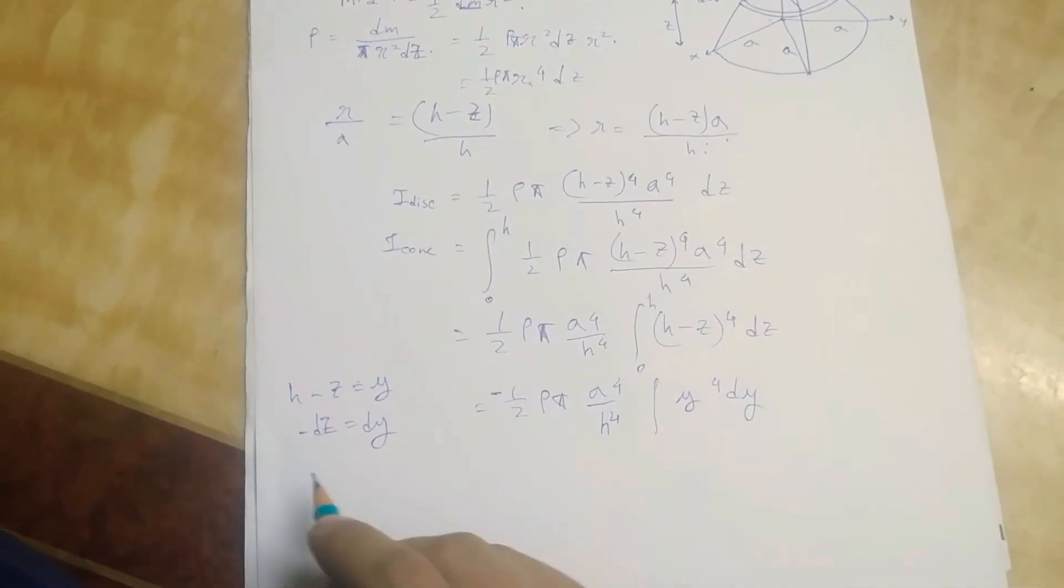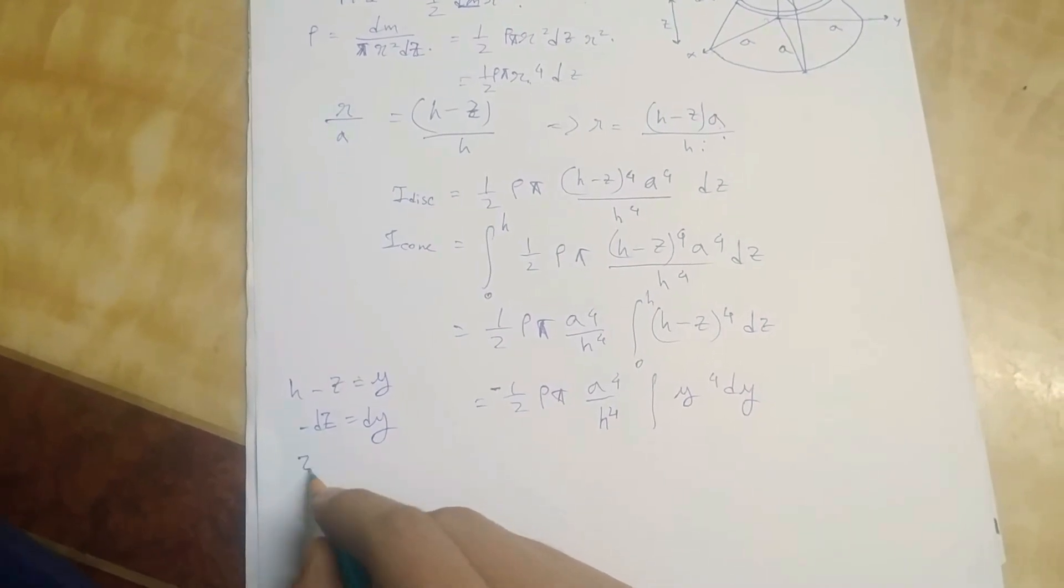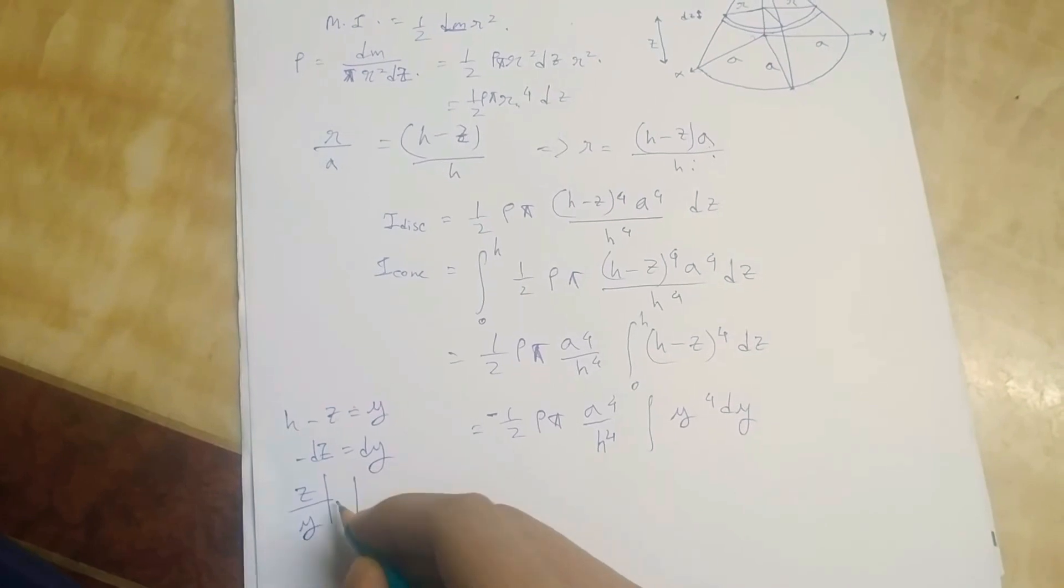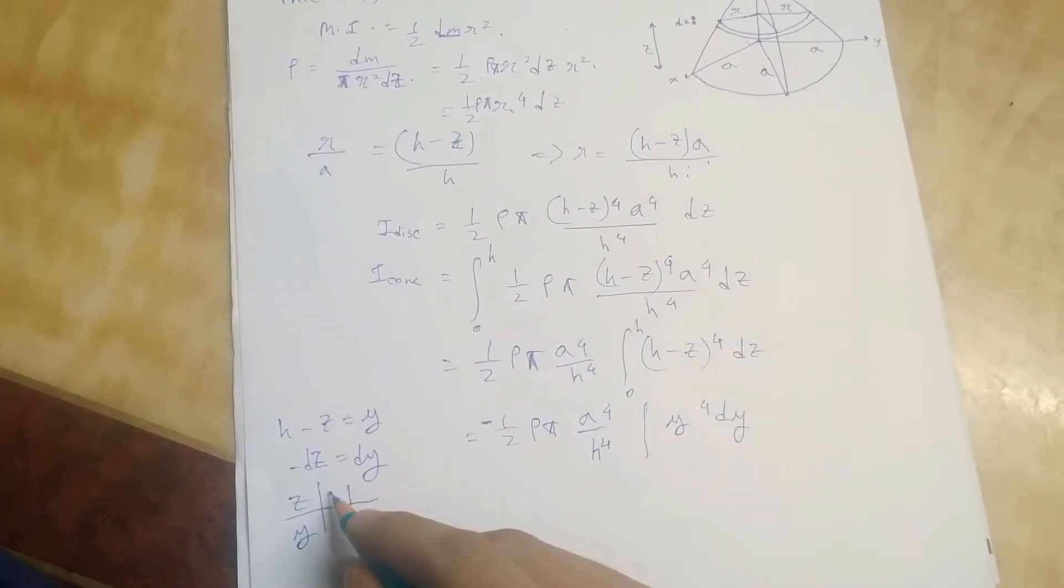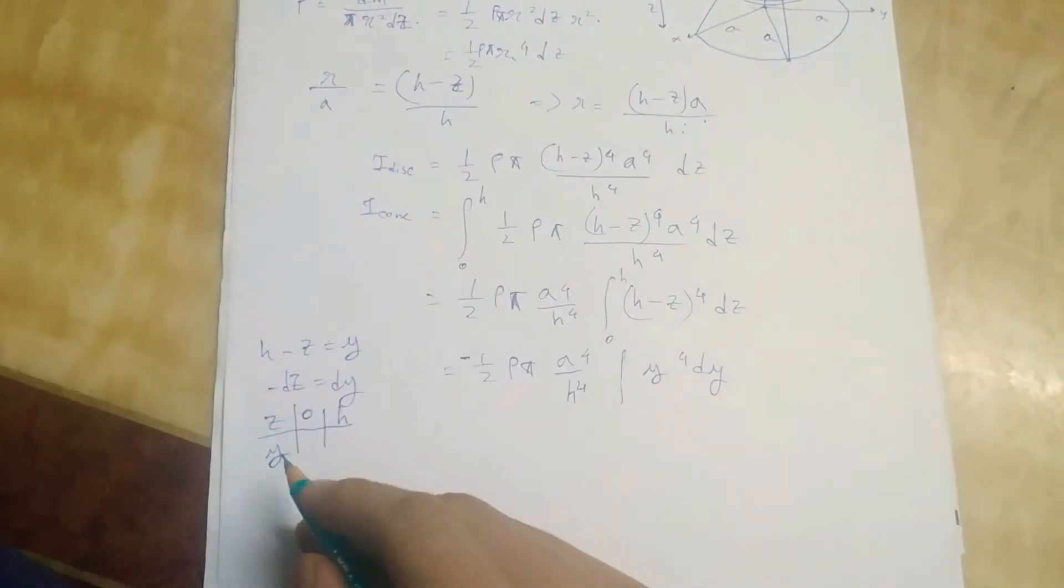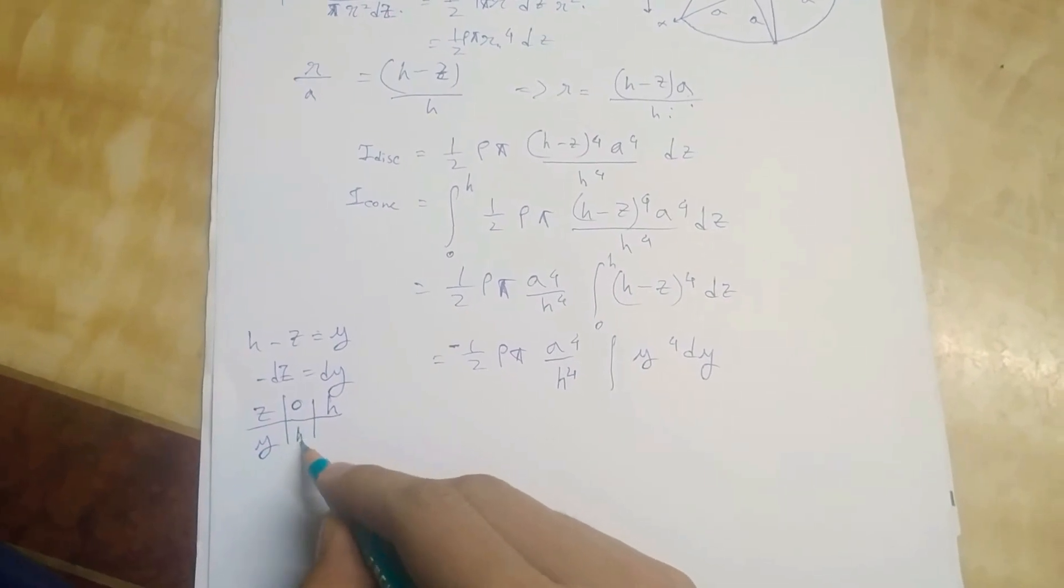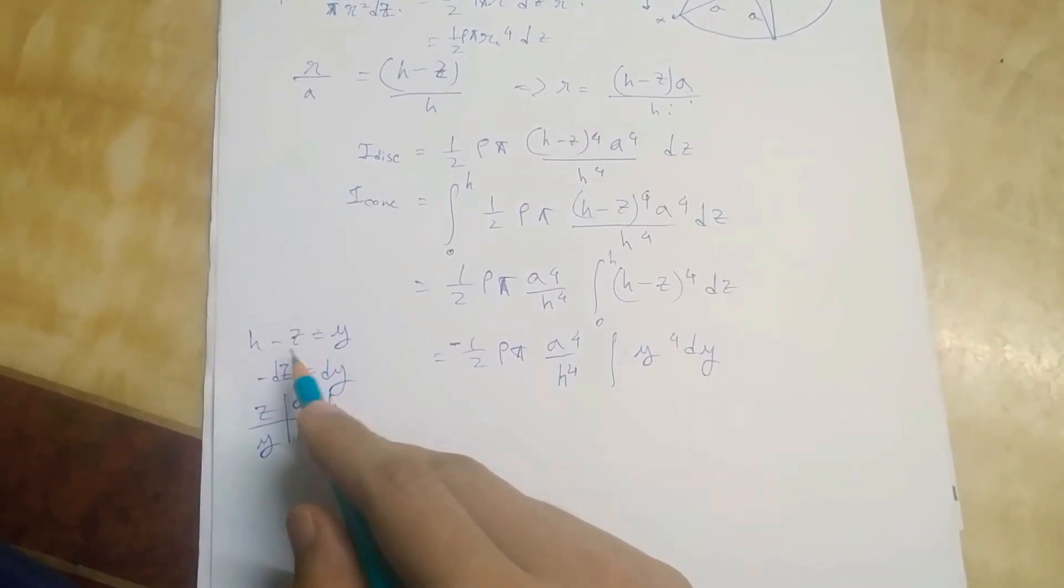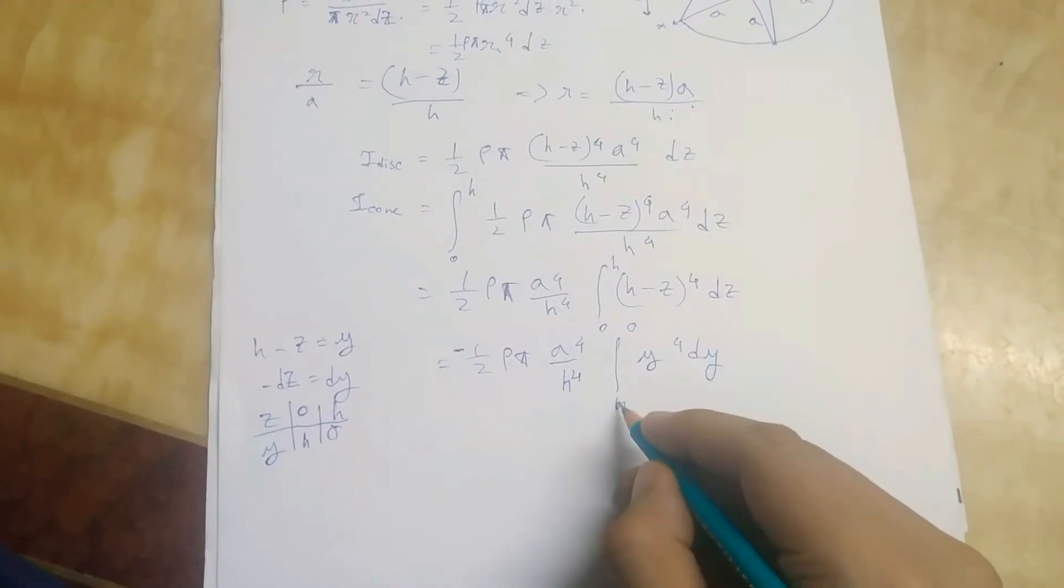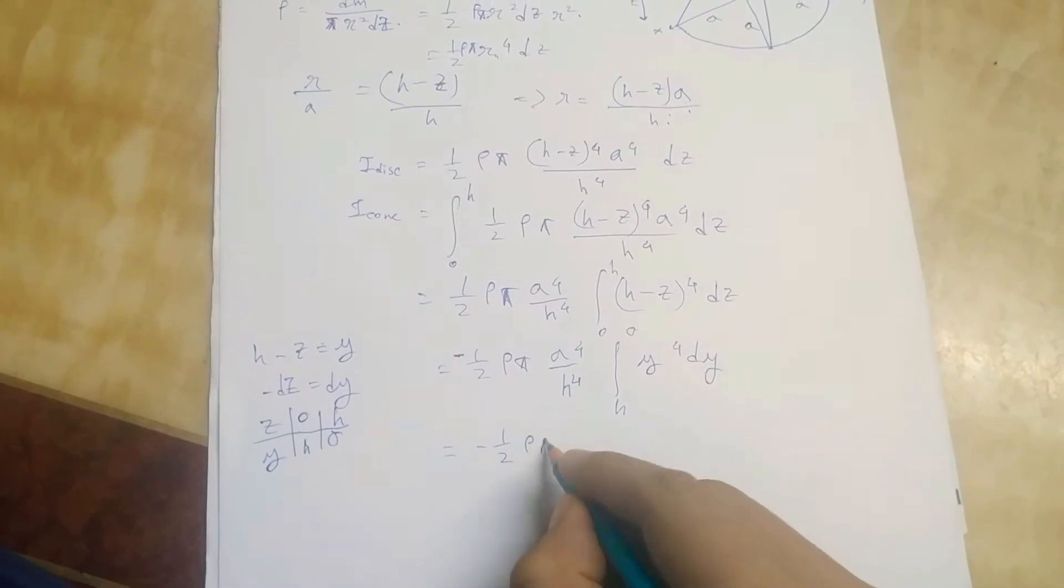The limits will change. When the limit of z was 0, limit of y will be h. And when the limit of z was h, limit of y will be 0.